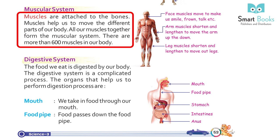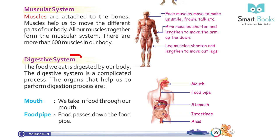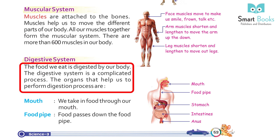Muscles are attached to the bones. Muscles help us to move the different parts of our body. All of our muscles together form the muscular system. There are more than 600 muscles in our body.